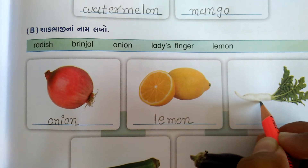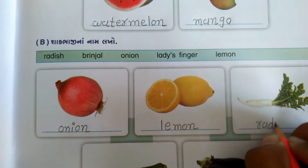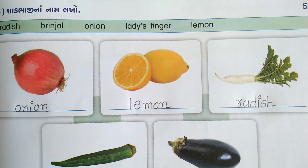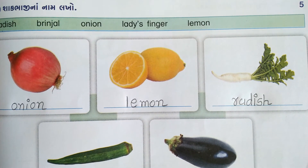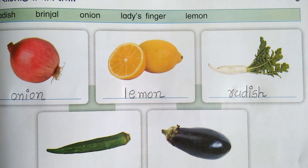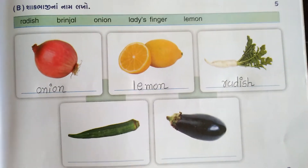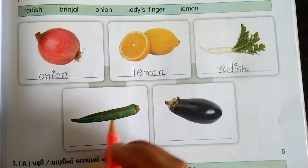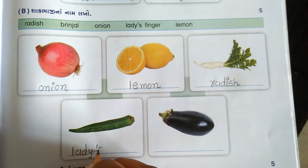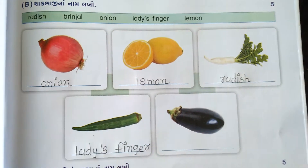Next, look at what's there - there is a picture of mūḷā (radish), it is called RADISH. After that there is bhinḍo (okra/ladies finger) - what is it called? LADIES FINGER. So write it.